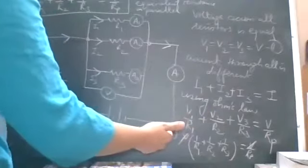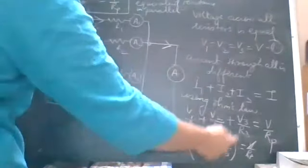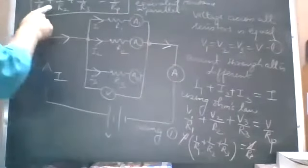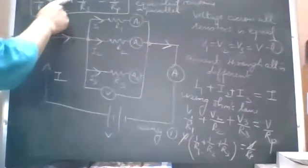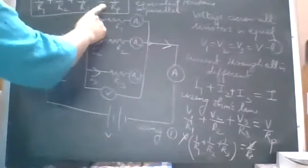So V is common from the left hand side, gets cancelled with the right hand side voltage. And this is what we are left with: 1 by R1 plus 1 by R2 plus 1 by R3 is 1 by Rp. Equivalent resistance in parallel.